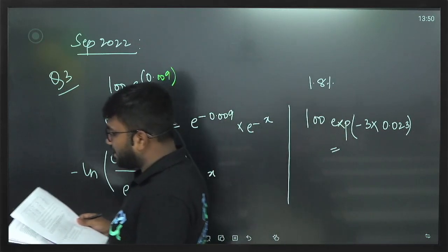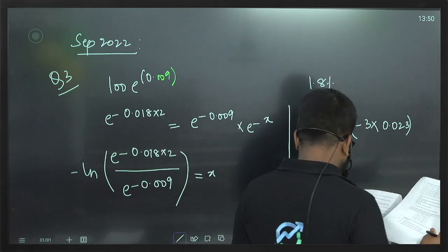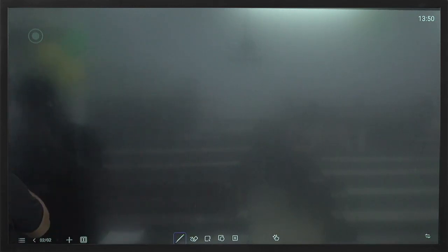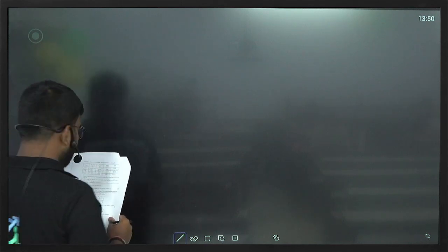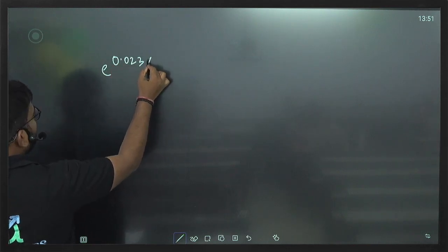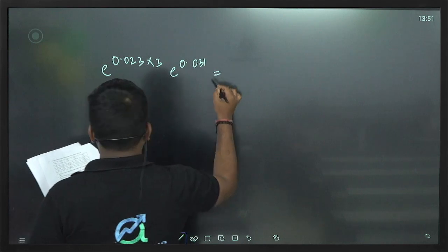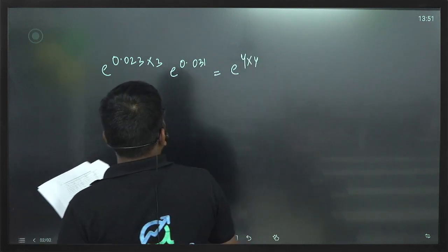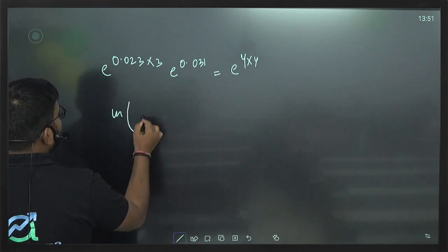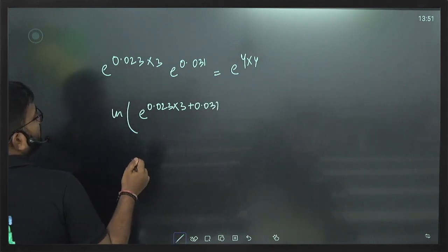Then we need to find the 4th year spot rate. We can find the 4th year spot rate by mixing the 3-year spot rate and the 4th year forward rate. So: e to the power 0.023 into 3, times e to the power 0.031, equals e to the power y into 4. The 4-year rate comes from there. Take log on both sides: ln(e^(0.023×3) + 0.031) divided by 4 equals y.